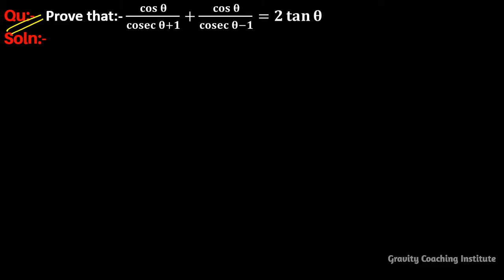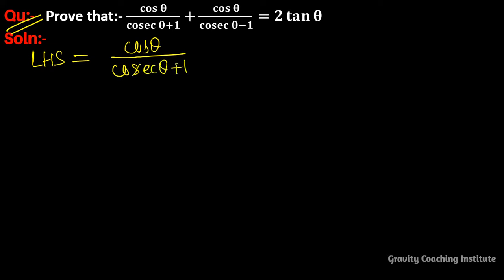Question: prove that cos θ upon (cosec θ + 1) plus cos θ upon (cosec θ - 1) equals 2 tan θ. First of all, we write the LHS: cos θ upon (cosec θ + 1) plus cos θ upon (cosec θ - 1).